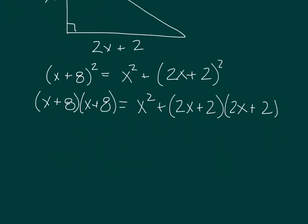We know that x plus 8 times x plus 8 gives us x squared, 8x and 8x is 16x plus 64.